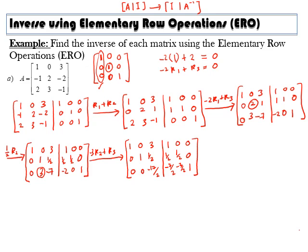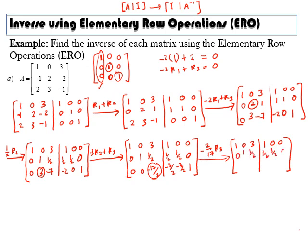Next is this element — we want to make it 1. It will be multiplied by a scalar: negative 2 over 17 of R3. R1 and R2 remain the same: row 1 is 1, 0, 3, 1, 0, 0; row 2 is 0, 1, 1/2, 1/2, 1/2, 0. Row 3 becomes 0, 0, 1 and 7/17, 3/17, negative 2/17. We just multiply all elements of R3 by negative 2 over 17.